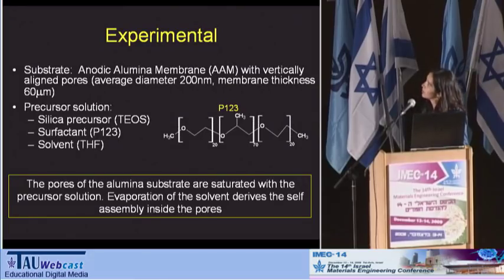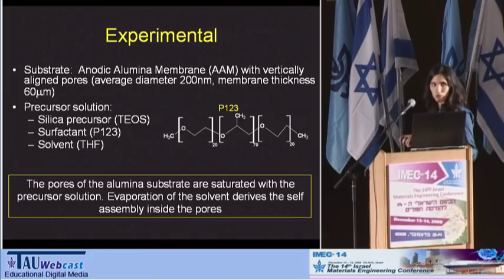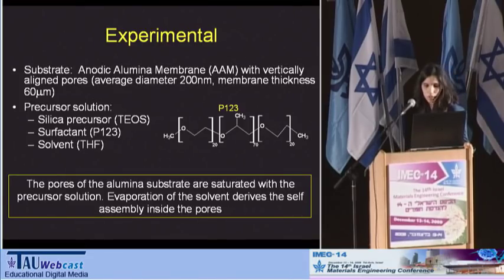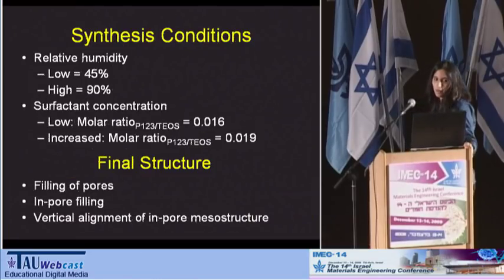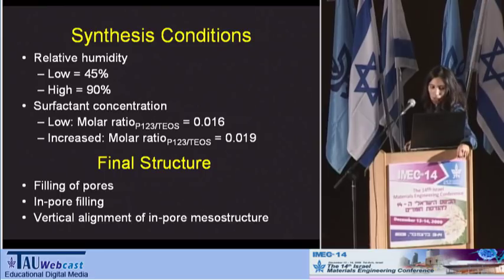The experimental system we chose is a commercially available anodic alumina membrane with a thickness of 60 microns. The silica precursor is TEOS, as I mentioned before. The surfactant I will show results for today is P123, and the solvent used in my group is primarily THF, which allows us to dissolve the conjugated polymer into the solution. The experiments are done under controlled humidity conditions in which I soak the alumina membrane with the precursor solution. The evaporation of the solution promotes the self-assembly of the surfactant and silica inside the pores. The conditions I will look at are relative humidity and concentration of the surfactant, and I will check the effects of these conditions upon the pore filling and the appearance of vertical alignment of the in-pore mesostructure.